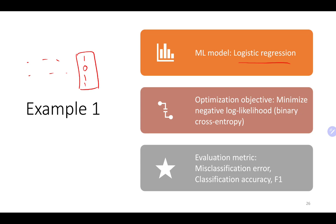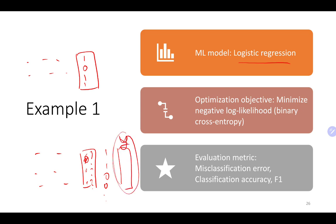Once the model is done with training, we have a trained, fitted model ready to use. We take another dataset and use this model on it. The labels are hidden from the model so it makes predictions: class 1, class 1, class 0, and so on. We already have the real labels — we just didn't show them to the model. Now we can compare the predictions to the real labels and evaluate the model. We can look at misclassification error, classification accuracy, F1 score, recall, and many different metrics.